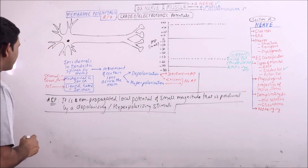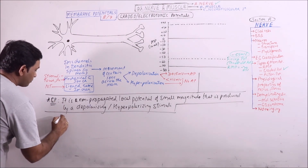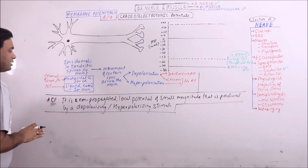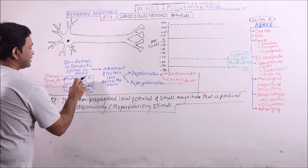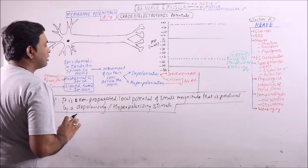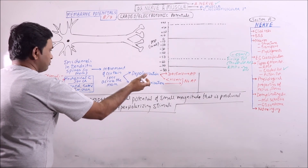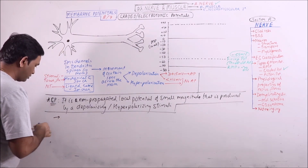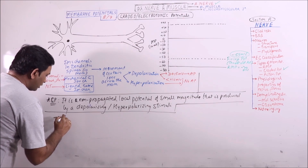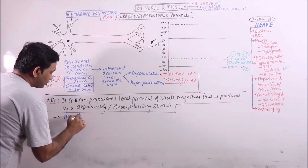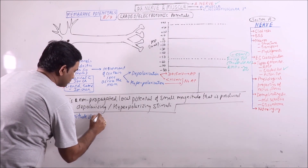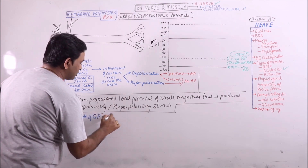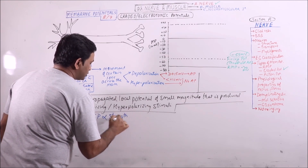Some important points about the graded potential. If we increase the strength of stimuli, more neurotransmitters will enter, then more ion channels will be involved, more will be the movement of ions across the membrane, and higher will be the magnitude of depolarization or hyperpolarization. So simply we can say that the magnitude of graded potential is directly proportional to the strength of stimuli.